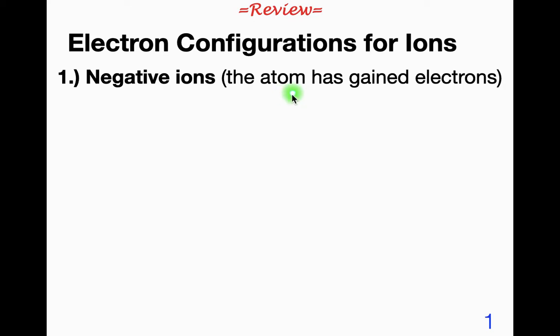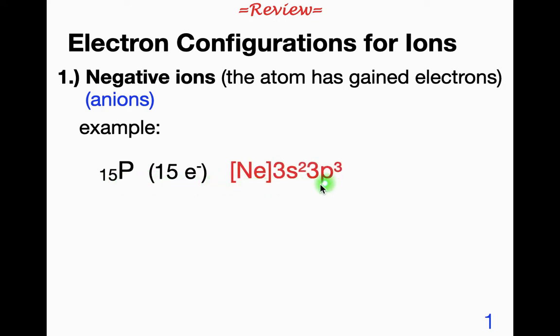Negative ions, of course, means that the atom has gained electrons. Negative ions are called anions. For example, phosphorus is atomic number 15, and its electron configuration would be this. If it has a negative 3 charge, which phosphorus often does, it would simply have three more electrons. So as you would expect, we simply add three more electrons, and that would be it.